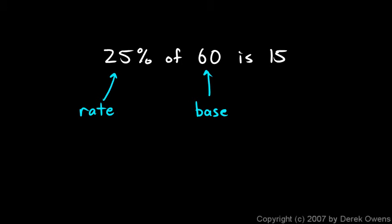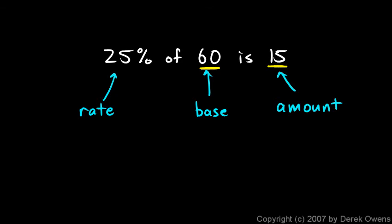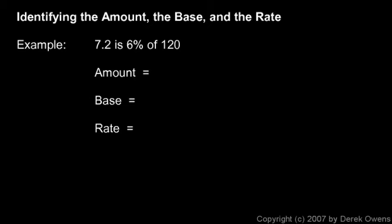The base is the total. In this case, 60 is the base — the whole thing. 25% of what? 25% of that total amount. The base is often preceded by the word 'of.' Then there's the amount — the part or fraction of the total. Here, 15 is a certain part of the total 60. The rate is always the ratio of the amount over the base: 15 over 60 is 25%. You need to know all three terms: rate, base, and amount.